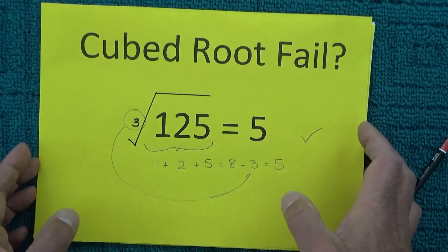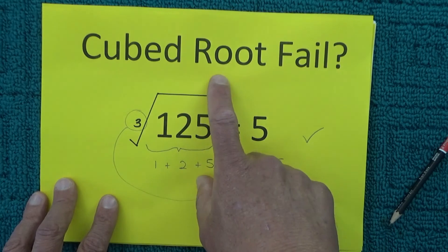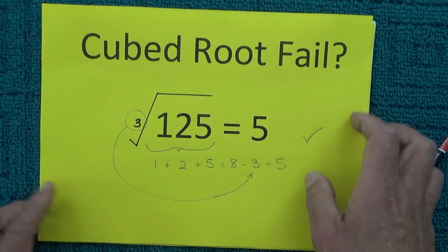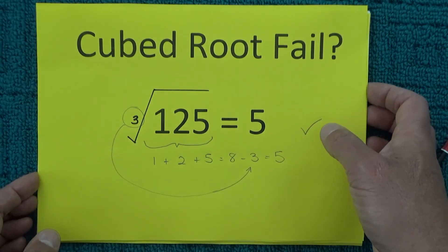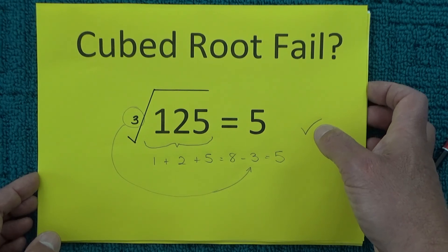So there we go this is what I'm calling the cubed root shortcut method fail. Okay well hope you've enjoyed this video thanks for watching and goodbye for now.